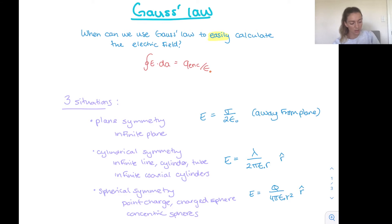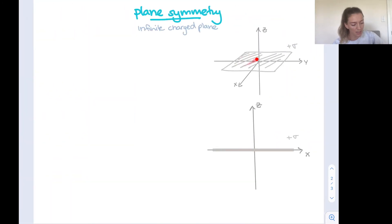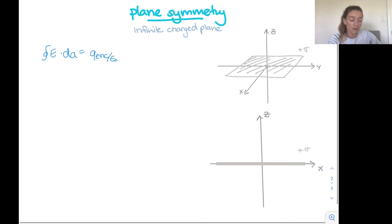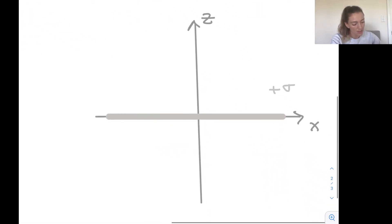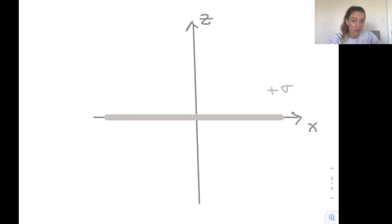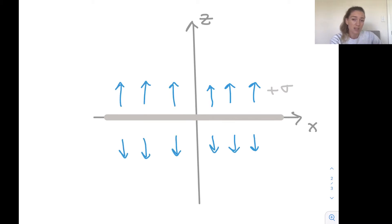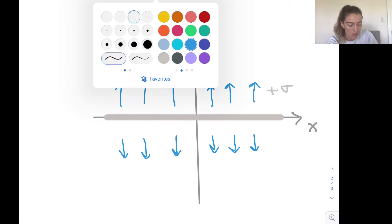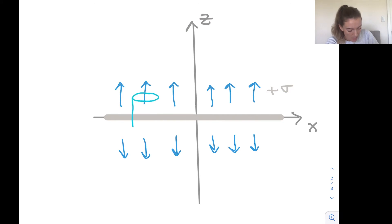Now let's use Gauss's law to find each of these electric fields. For plane symmetry, we have an infinite plane extending to infinity in both the x and y directions, with a surface charge of positive sigma. To use Gauss's law, we need to figure out what our Gaussian surface should be. I already know the electric field is going to be pointing away from the plane. One key for using Gauss's law is that you have to already know the direction of your electric field. So I'm going to pick a Gaussian surface that straddles the plane — like a little cylinder.